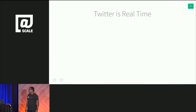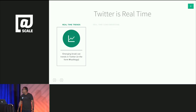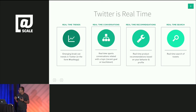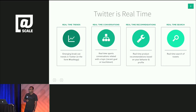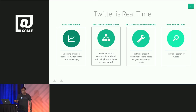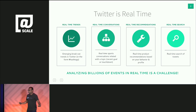Twitter is all about real-time. A lot of things happen on Twitter in real-time — real-time trends emerging based on hashtags, what hashtags are in the news, and various conversations breaking out. There are also real-time product recommendations that take advantage of ongoing conversations to introduce a product. And real-time search allows tweets to be indexed very quickly so they show up in search results. Analyzing millions of events in real-time is a challenge, and that's why we're big into real-time analytics.